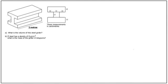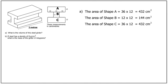The top rectangle is 36 by 12 centimetres. The middle one is 12 by 12 centimetres, and the bottom one is the same as the top one: 36 by 12 centimetres. Let's label them A, B and C respectively. The area of shape A is 36 times 12, which is 432 square centimetres. The area of shape B is 12 times 12, which is 144 square centimetres. The area of shape C is 36 times 12, which is also 432 square centimetres. Notice how I'm writing in the units as I go. The total cross-sectional area is therefore 432 plus 144 plus 432, which is 1008 square centimetres.